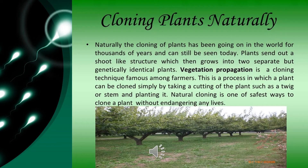In this slide we are discussing about cloning of plants. Naturally, the cloning of plants has been going on in the world for thousands of years and can still be seen today. Plants send out a shoot-like structure which then grows into two separate but genetically identical plants. Vegetative propagation is a cloning technique famous among farmers — a plant can be cloned simply by taking a cutting such as a twig or stem and planting it. Natural cloning is one of the safest ways to clone a plant without endangering any lives.